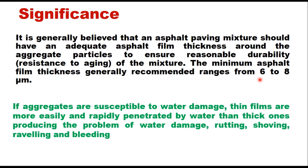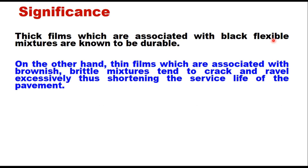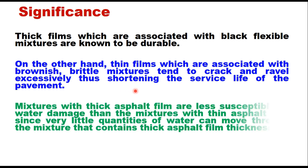If aggregates are susceptible to water damage, thin films are more easily and rapidly penetrated by water than thick ones, producing problems of water damage, rutting, raveling, and bleeding. Thick films, which are associated with black flexible mixtures, are known to be durable. On the other hand, thin films, which are associated with brownish brittle mixtures, tend to crack and ravel excessively, shortening the service life of the pavement. Mixtures with thick asphalt film are less susceptible to water damage.